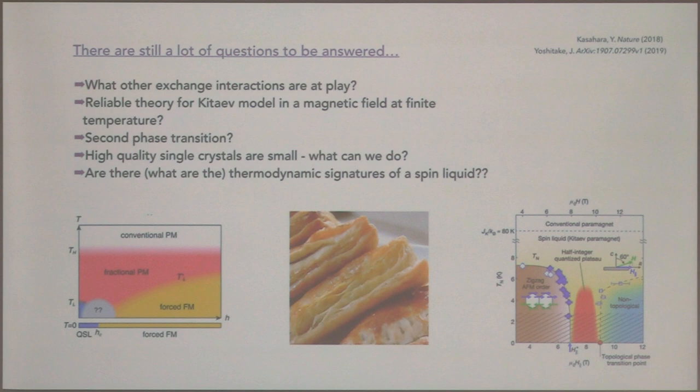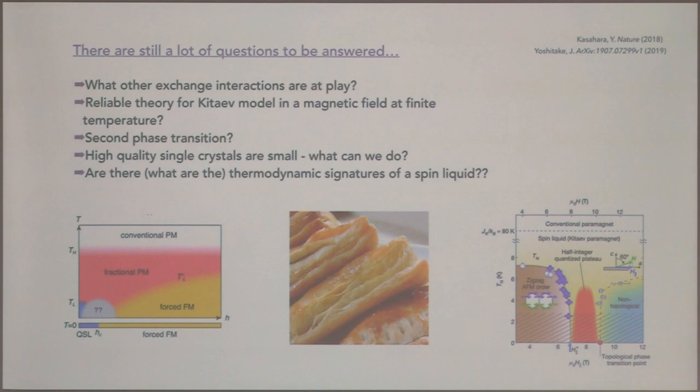Kitaev never really considered what happens in magnetic fields. Here we have a system where the spin liquid isn't really where we expected it might be, but instead we're seeing a lot of interesting physics at higher magnetic fields. It's also very numerically challenging to look at the Kitaev model in magnetic fields at finite temperatures. On top of that, in real life things are more complicated: we know there are other factors like Heisenberg exchange interactions, further nearest neighbors, a finite G-factor anisotropy which often isn't even discussed, and monoclinic distortions because these are two-dimensional materials.